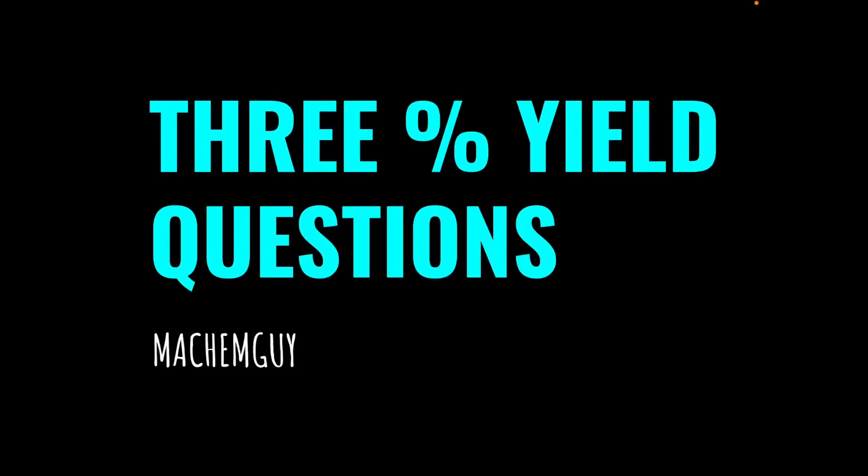I thought I'd make a quick video that looked at the three different types of percentage yield questions that are typically asked on A-level chemistry papers.